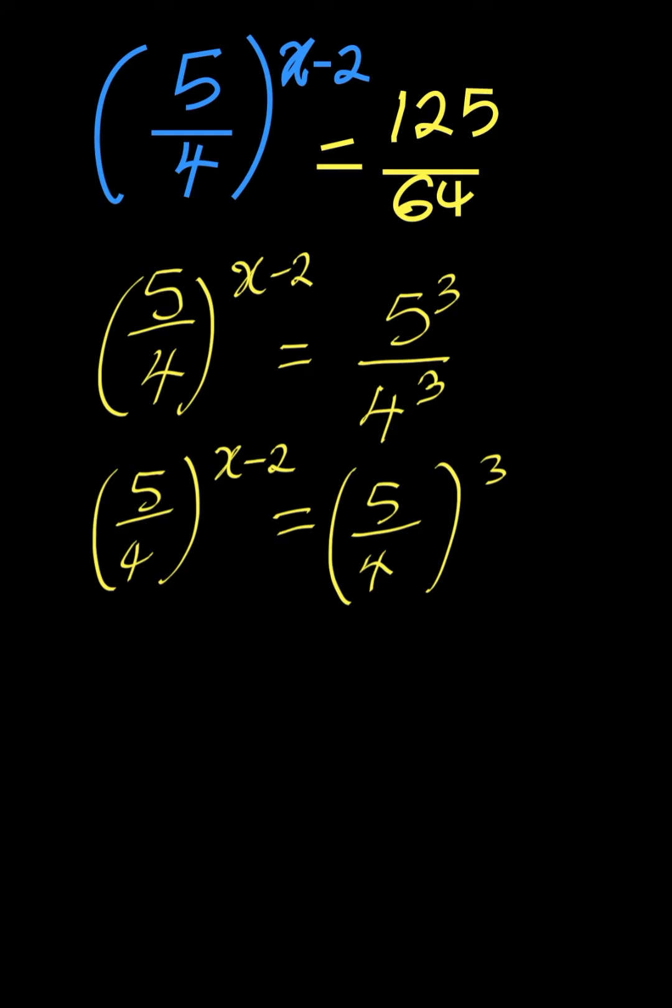Now, both the left hand side and the right hand side are having the same basis, so the powers must also be equal. Therefore, x minus 2 is equal to 3.